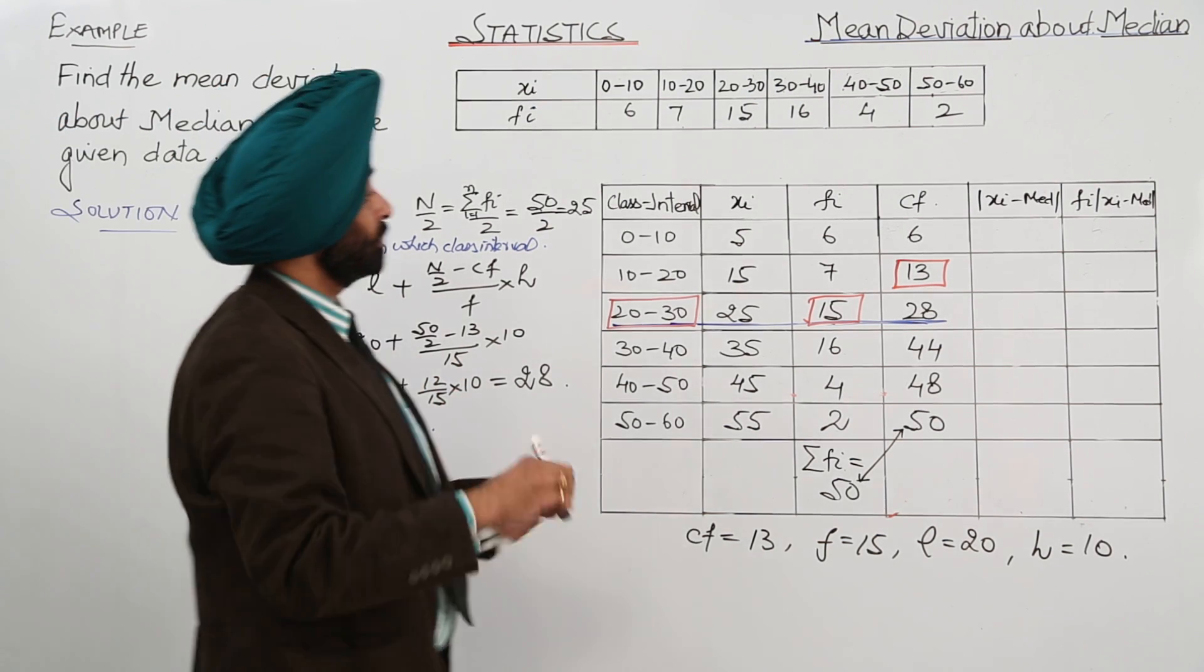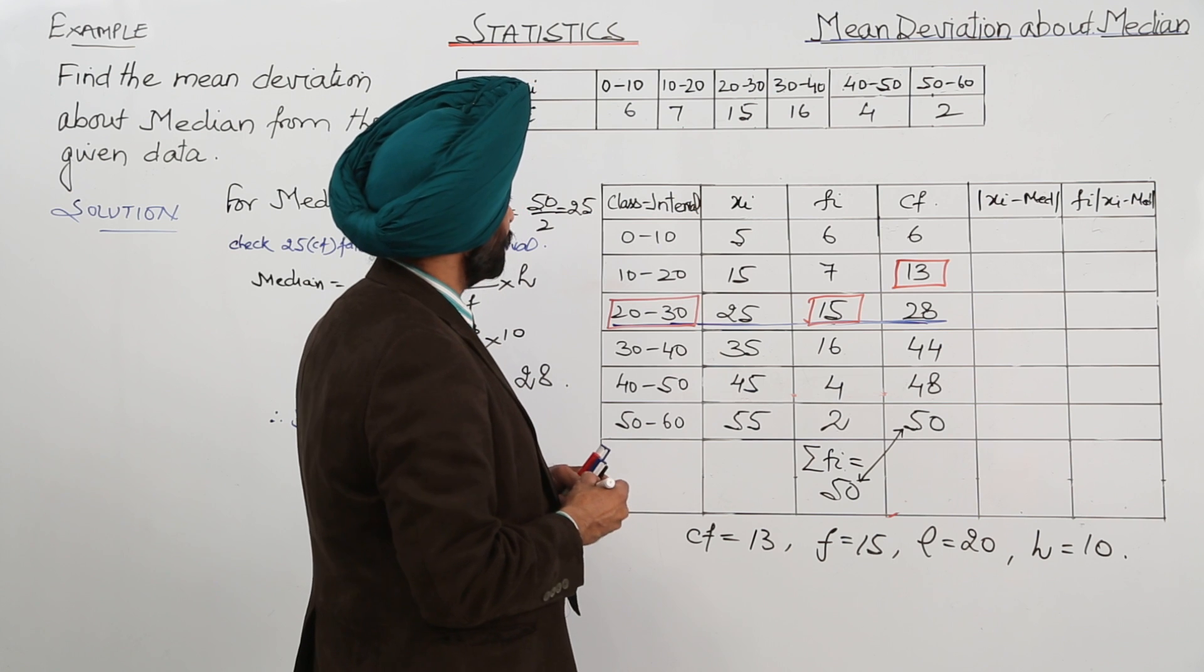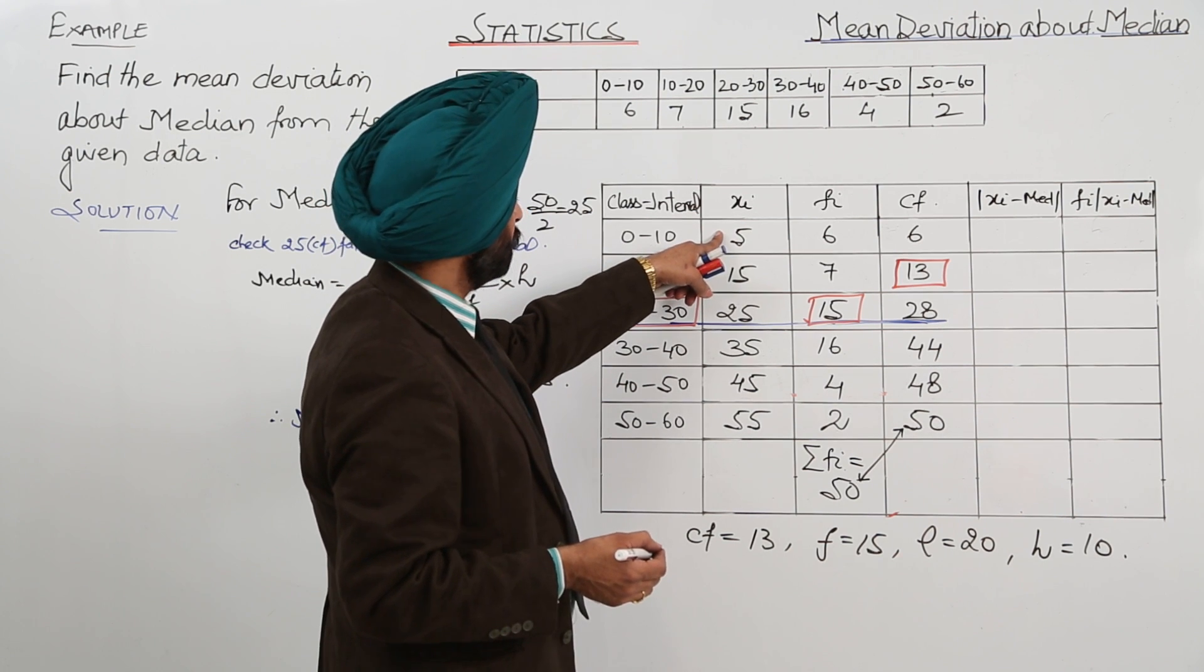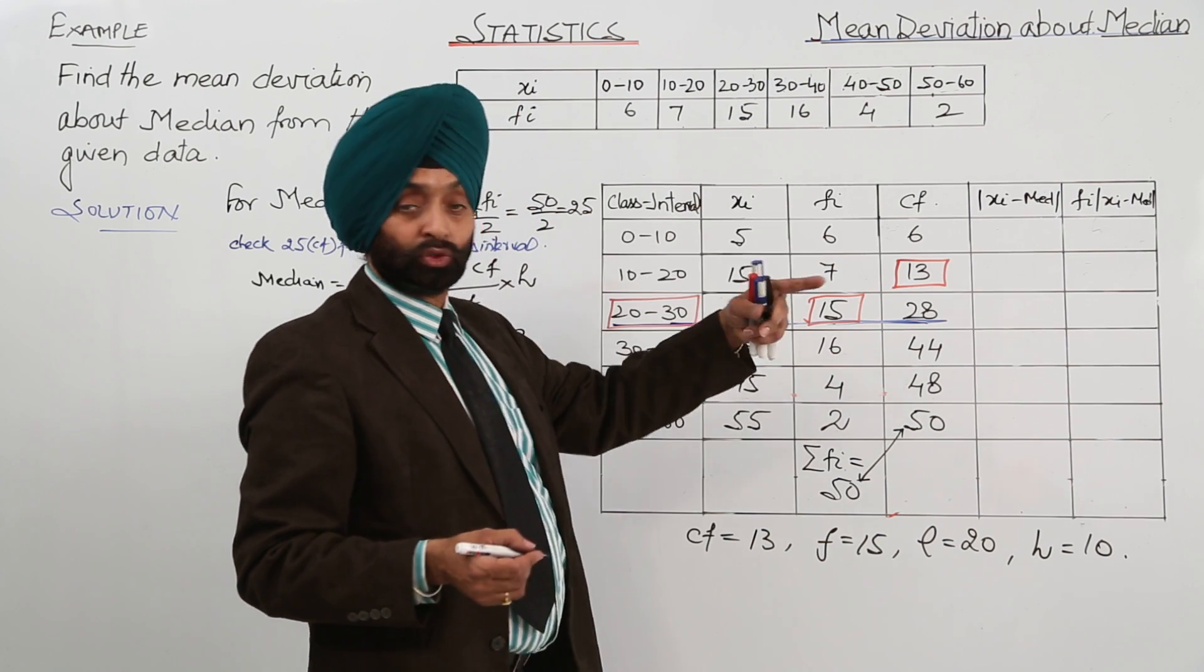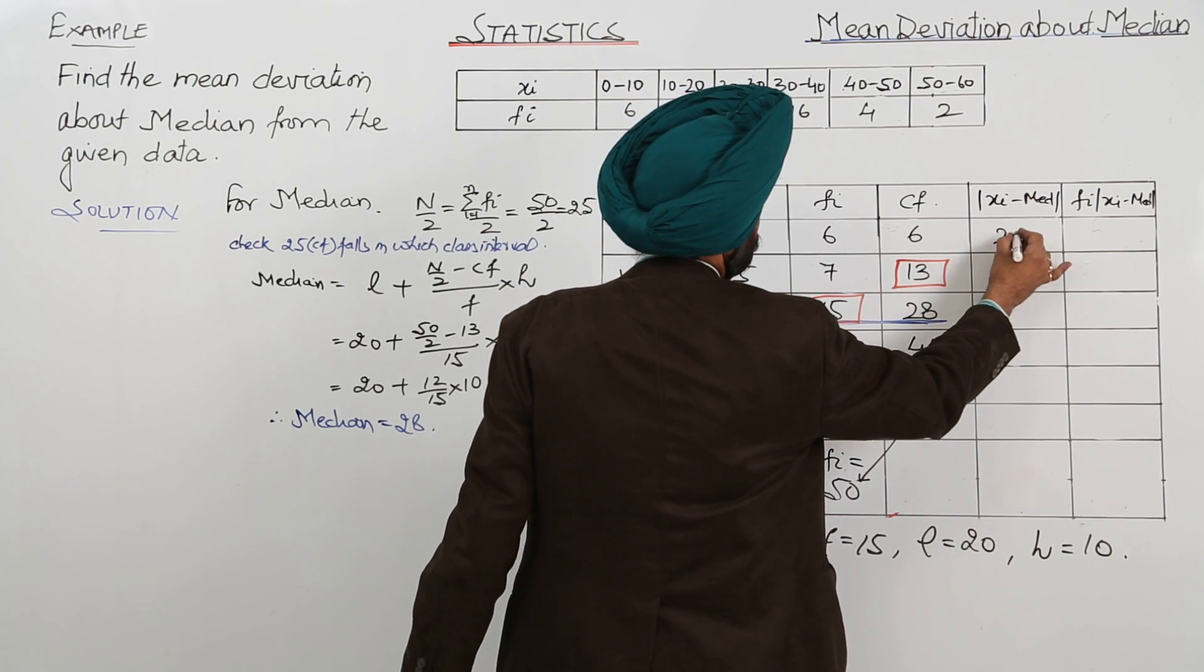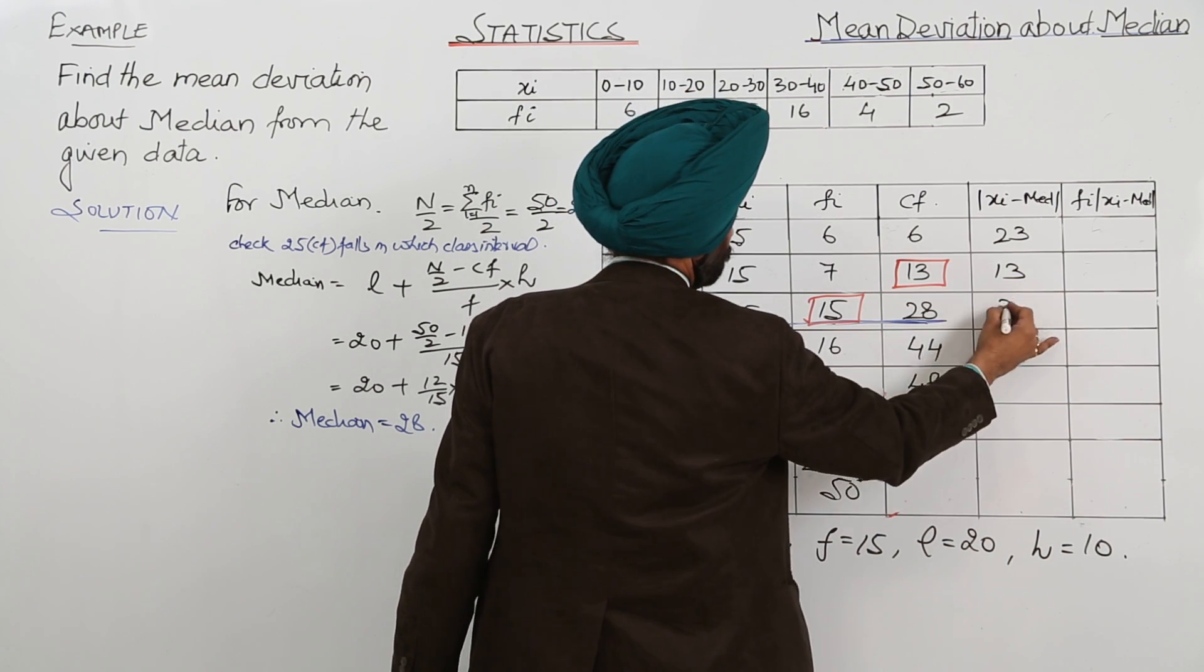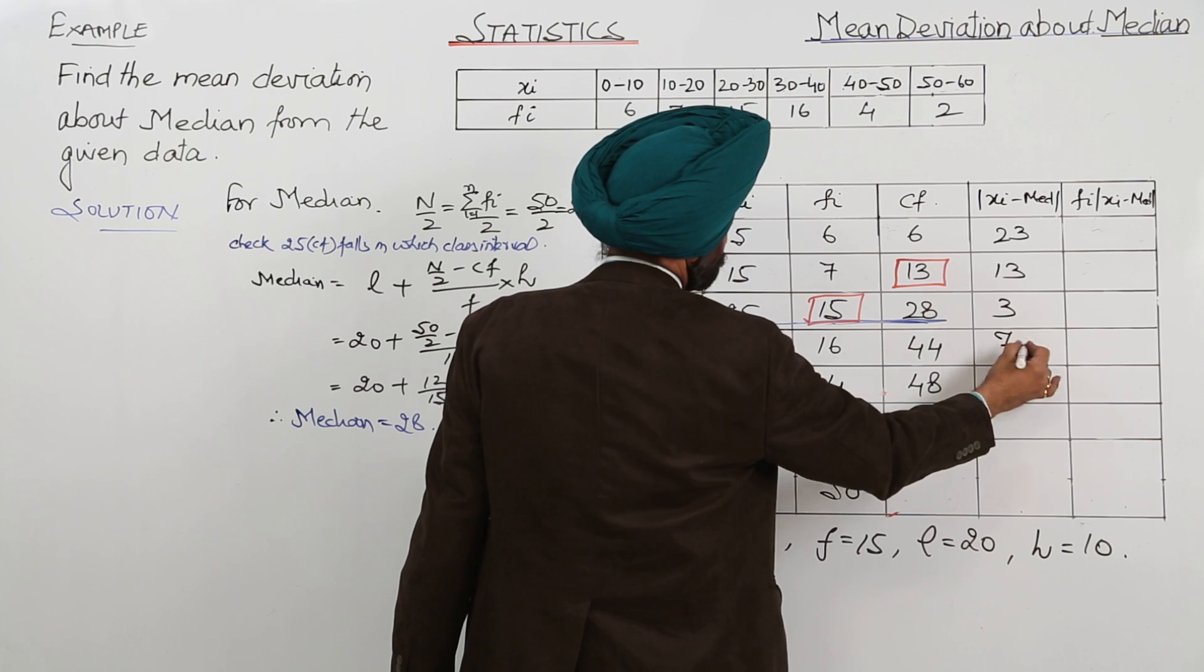Now completing the table. Xi minus median: 5 minus 28 in the modular form is 23, then 13, 3, 7.